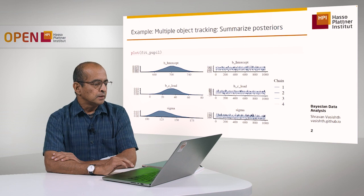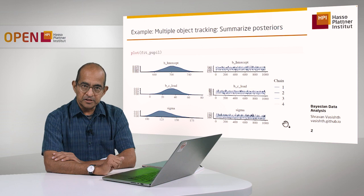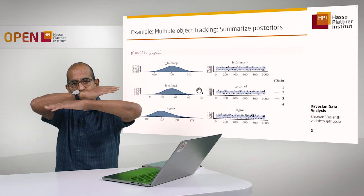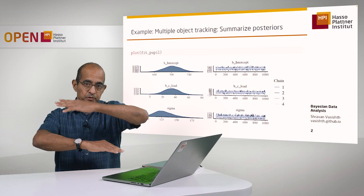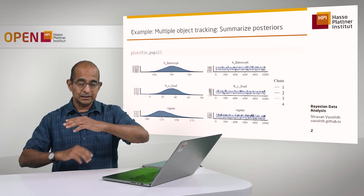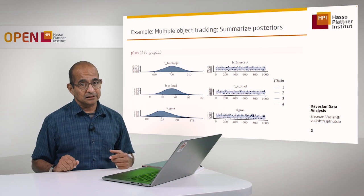On the right-hand side are the four chains. The MCMC sampler is trying to get samples from these distributions. What you're seeing is that these four chains are sitting on top of each other — these are called fat hairy caterpillars. This is a good sign because it shows that each of the chains for each parameter is sampling from the same distribution.